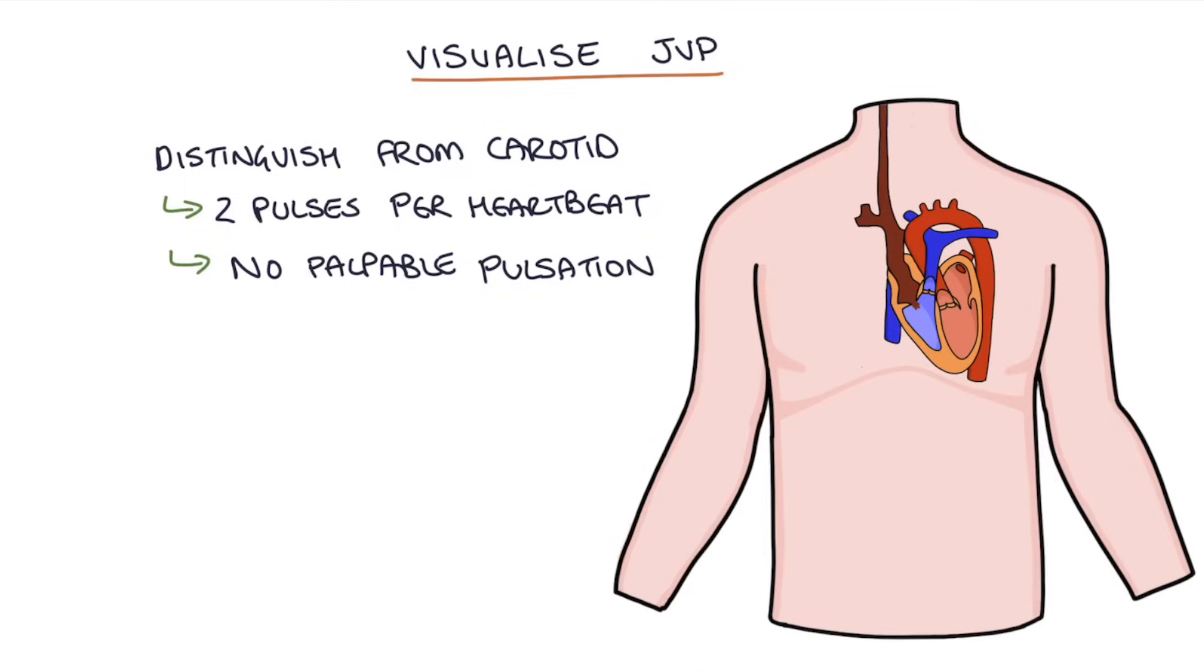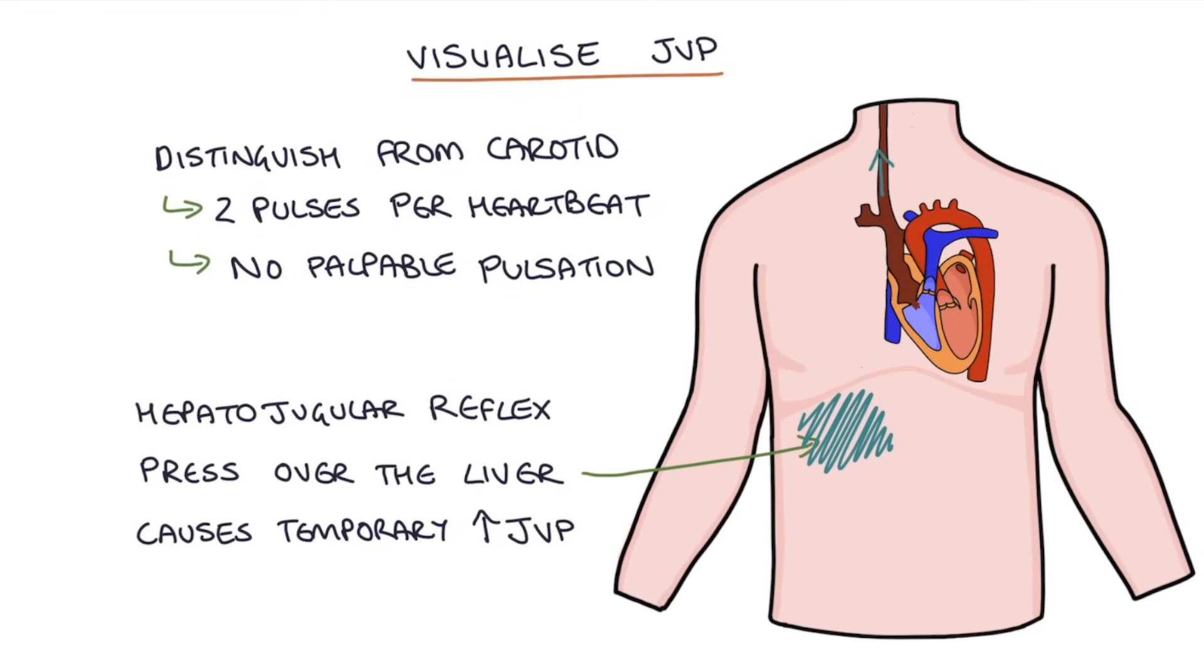Another way to check whether what you're seeing is the JVP is to press on the liver or press in the right upper quadrant of the abdomen. This will cause a temporary rise in the JVP, and this is called the hepatojugular reflex.